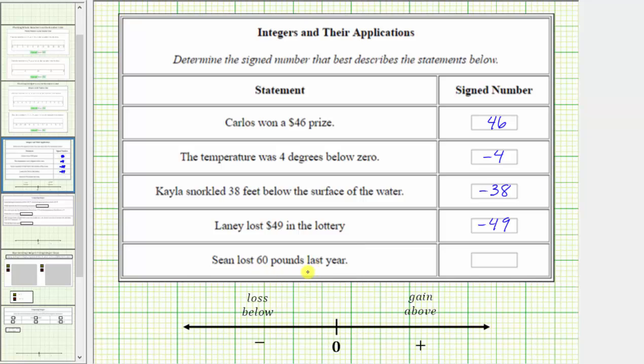Finally, Sean lost 60 pounds last year. Because Sean lost 60 pounds, negative 60 best describes the statement. Positive 60 would represent a gain of 60 pounds.